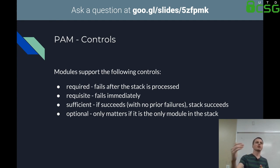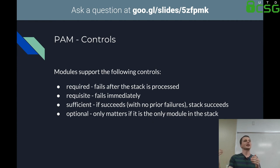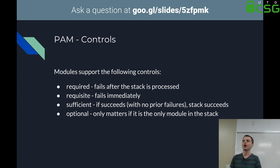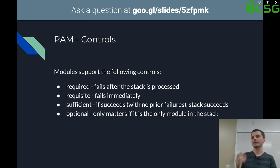'Sufficient' — if it succeeds with no failures in the stack, then you succeed completely. This is a neat directive that causes a lot of issues if you're writing your PAM config by hand, because you might be setting directives below the sufficient line expecting the user to continue authentication, but sufficient kicks them out early. We actually had that bug at the Honors College when we were rolling out a new login solution. Lastly, 'optional' — if it's the only module being used, then it matters, otherwise it does not.